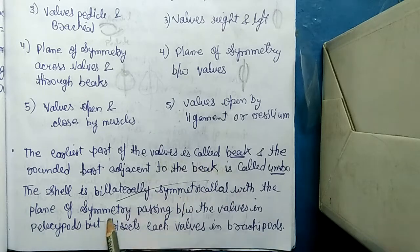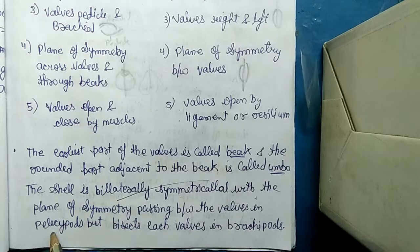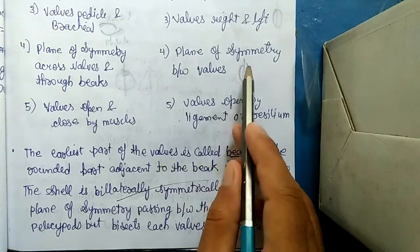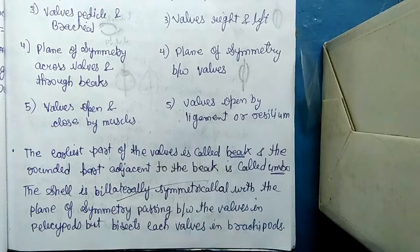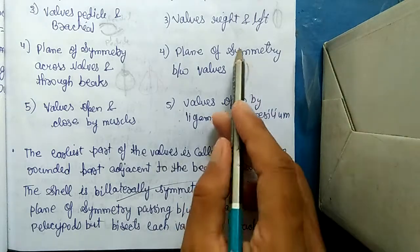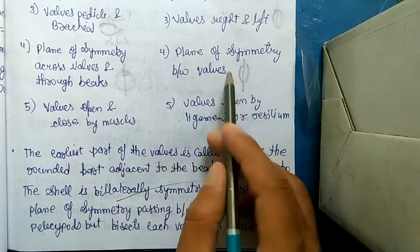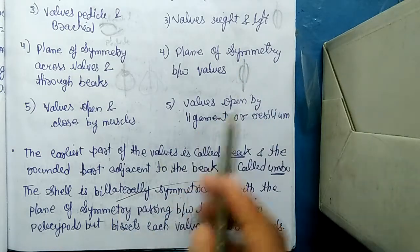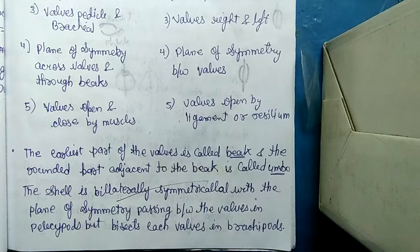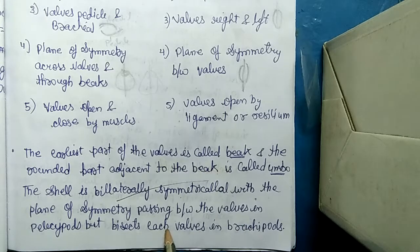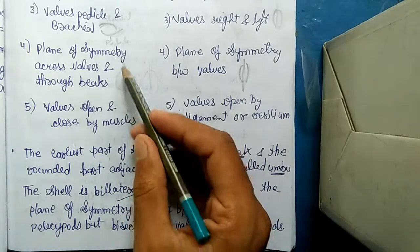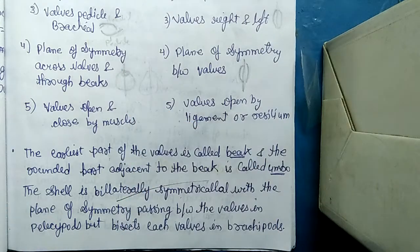To summarize: in Pelecypoda, the shell is bilaterally symmetrical with the plane of symmetry passing between the two valves. In Brachiopoda, the plane of symmetry bisects each valve individually. These are all the differences between Brachiopoda and Pelecypoda — you can take screenshots of these notes.